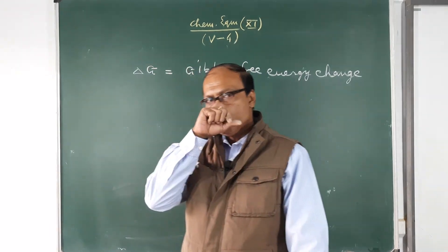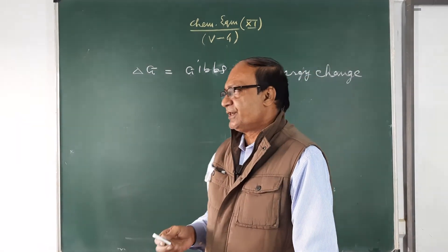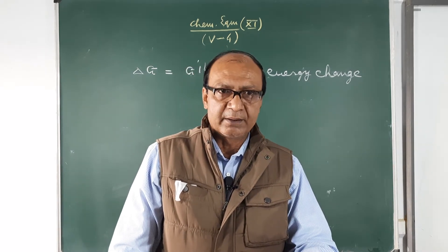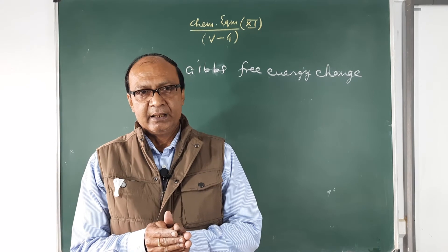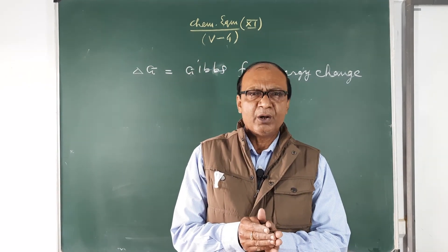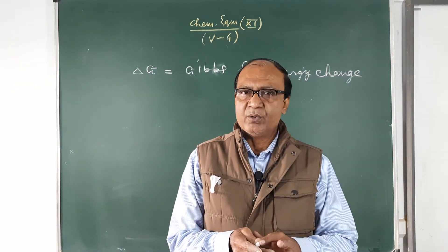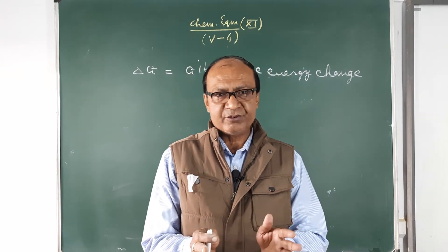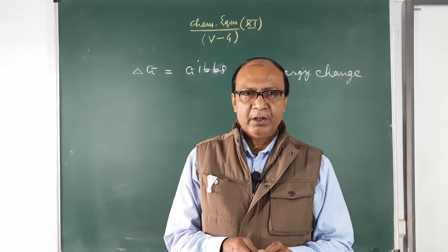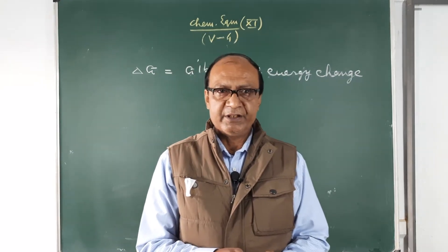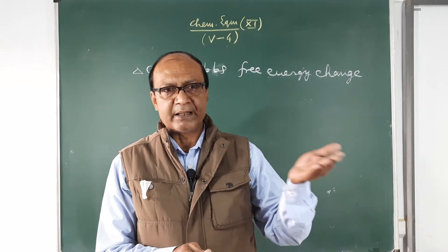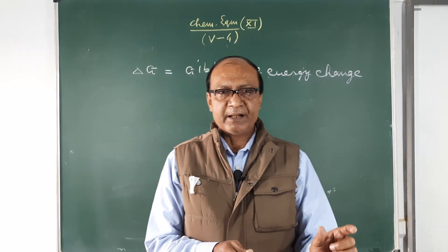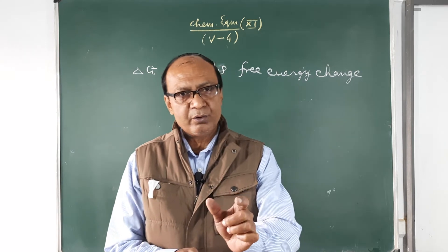Just as in physics we talk about the efficiency of heat engines and machines, in chemistry the energy a system can derive for useful work is the free energy. For example, a chemical battery is a source of chemical energy from which we can convert some chemical energy to electrical energy, but the entire chemical energy cannot be derived. Gibbs defined free energy as the amount of energy which can be used for doing useful work.